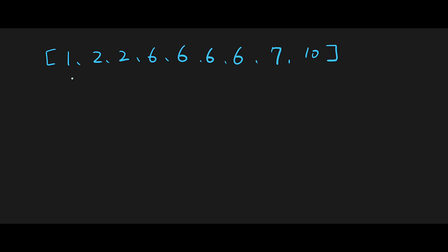The description says more than 25%, which means the length of the target number should be at least a quarter of the length of the input array. In this case, 9 divided by 4 equals 2.